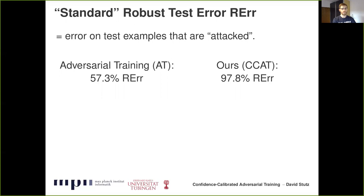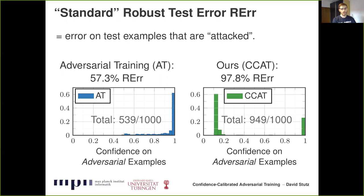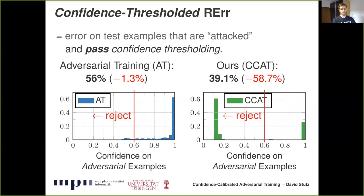Unfortunately, our model does not seem very robust by the standard metric — the robust test error is nearly 100%. However, looking at the confidence histograms for adversarial examples reveals a significant difference. For adversarial training on the left, most adversarial examples receive high confidence. For our confidence calibrated adversarial training on the right, most adversarial examples receive low confidence, so they can be rejected. We therefore propose a Confidence Threshold Robust Test Error: the fraction of misclassified or successfully attacked examples that also pass the confidence threshold. This metric also benefits adversarial training, but the improvement there is only about 1.3%, compared to more than 58% of adversarial examples rejected by our approach. As a result, we outperform regular adversarial training, and this metric is completely comparable to the standard formulation in related work.